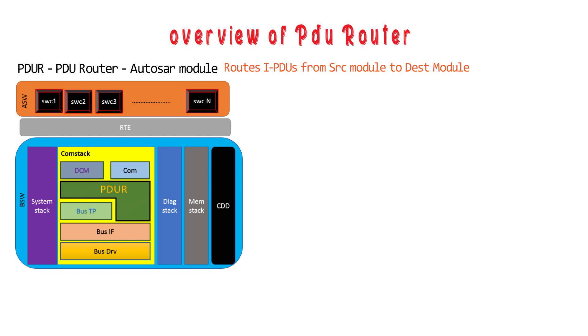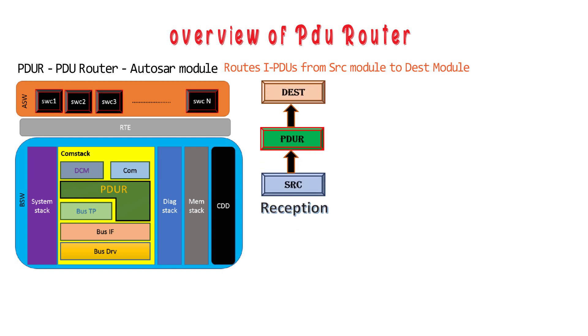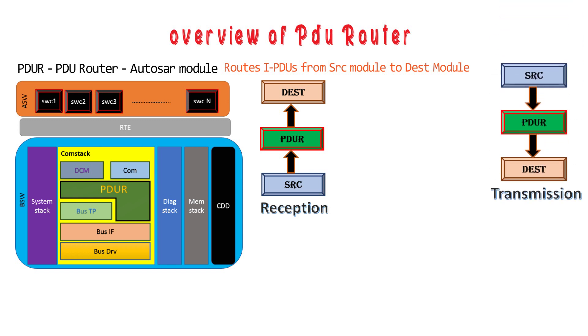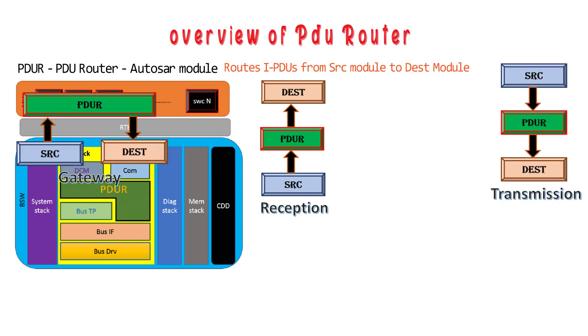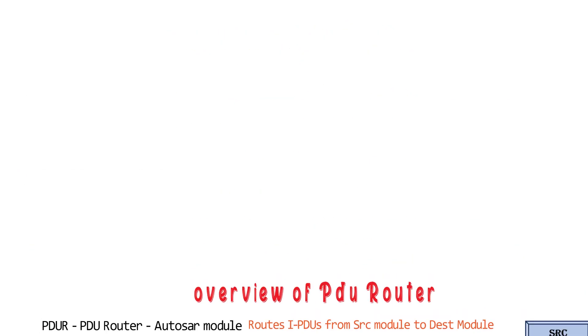It performs three functions. First, reception, where the source module is below and the destination module is above. Second, transmission, where the source is above and the destination is below. And third, gateway, where both source and destination modules are below.